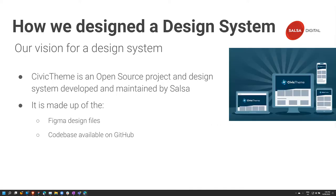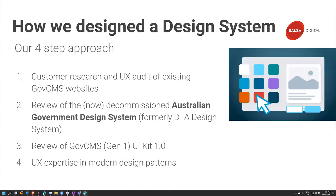We decided to do Civic Theme as an open source project. The design system has been developed and maintained by Salsa. We're about to go live with the first version, which will then be fully open source. Right now there are elements that are open source and a lot of things are available. We have a site at civictheme.io which makes the code base and the Figma design files available online. We're on a pre-launch version and these versions have been used by some projects while we test everything out.